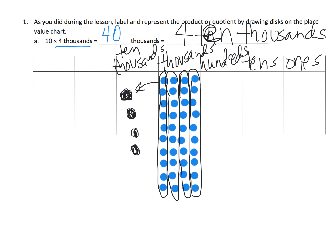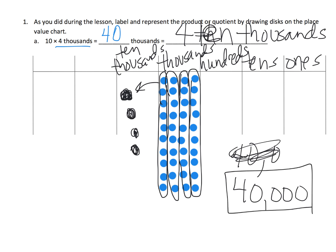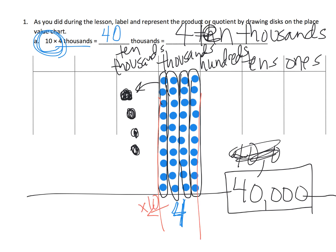That gives us four ten thousands. Another way you can write four ten thousands is to say we have 40 thousands. And here's the cool thing I want students to start noticing: we had four in the thousands column, and then when we multiplied by ten, we ended up with four in the ten thousands column. It's as if the four moved to the column to the left — it moved one space to the left. That's the shortcut we eventually want our students to start seeing.